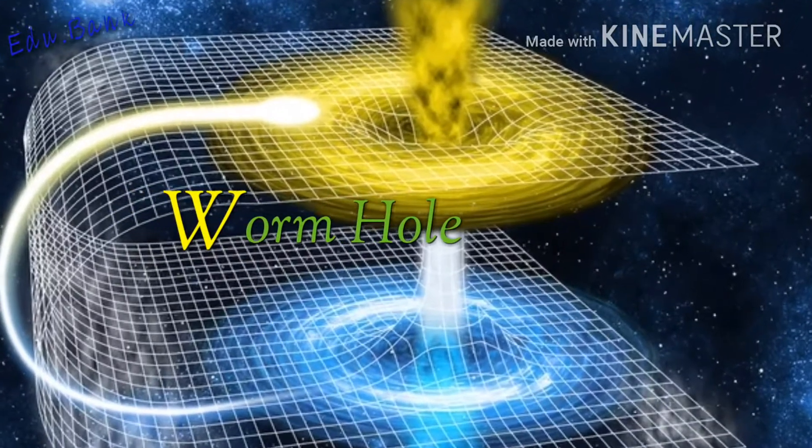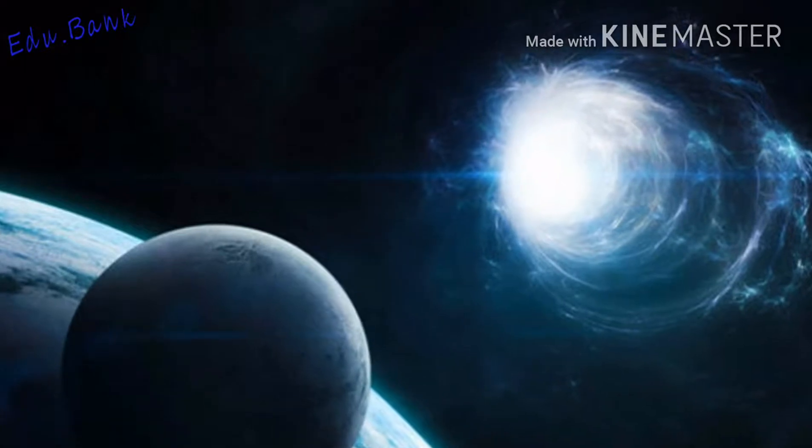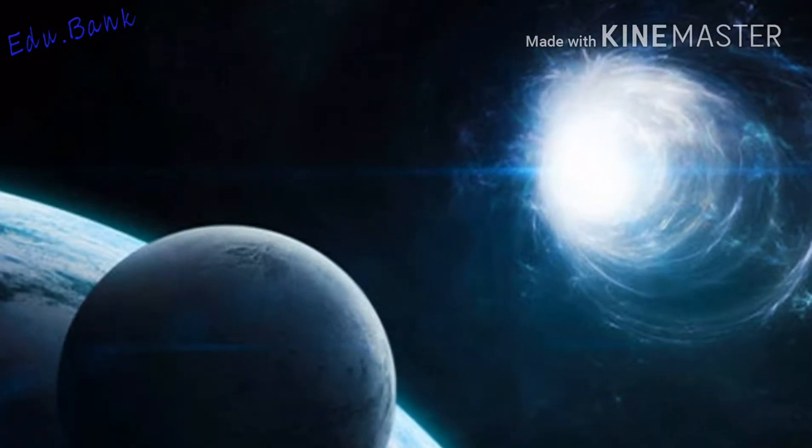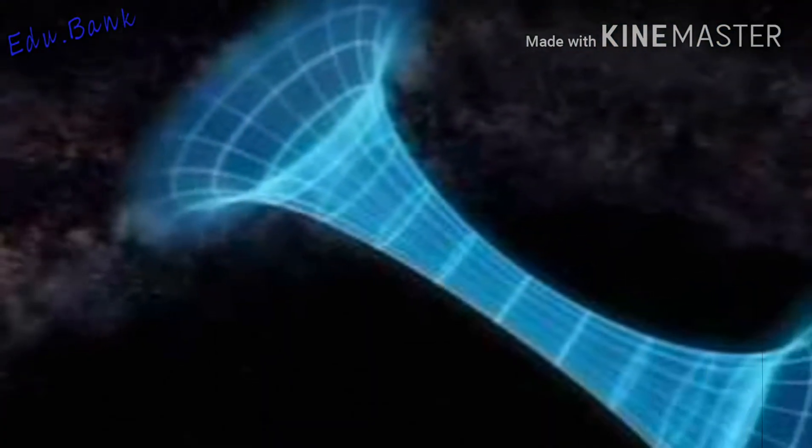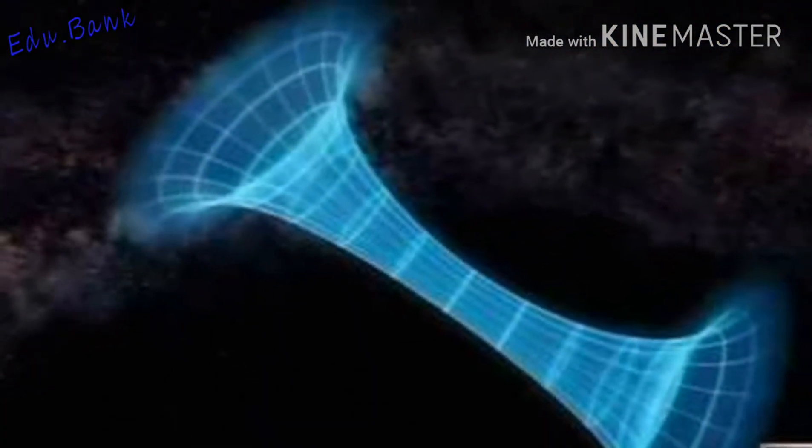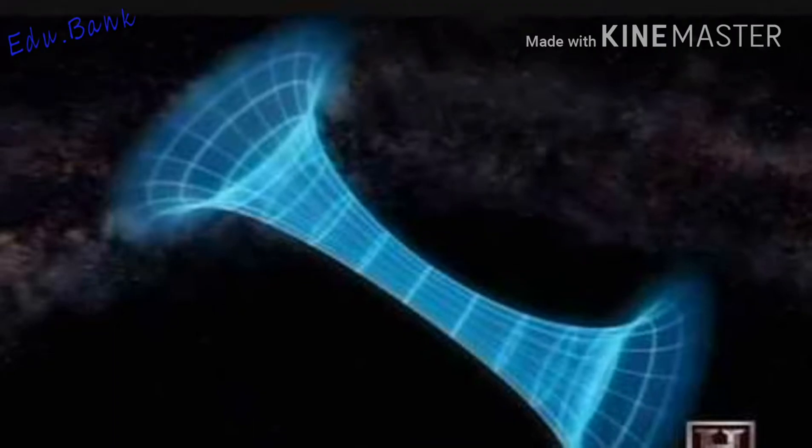Theoretical curved black holes aren't the only possible cosmic shortcut to the past or future. As made popular by everything from Star Trek Deep Space Nine to Donnie Darko, there's also the equally theoretical Einstein-Rosen bridge to consider. But of course you know this better as a wormhole.